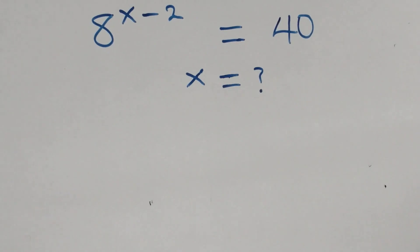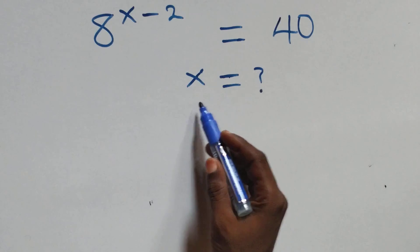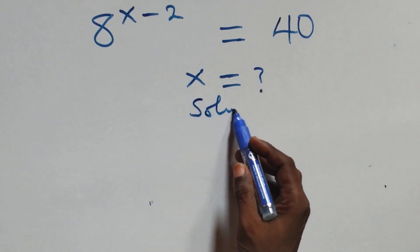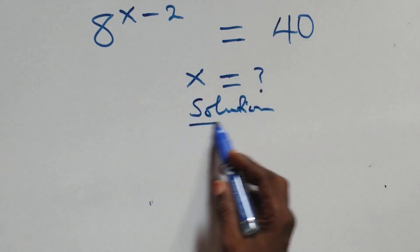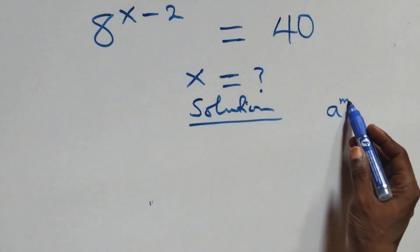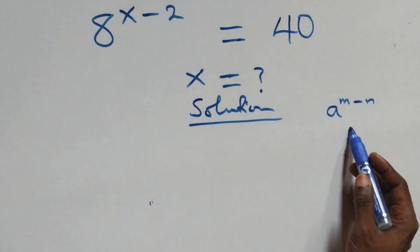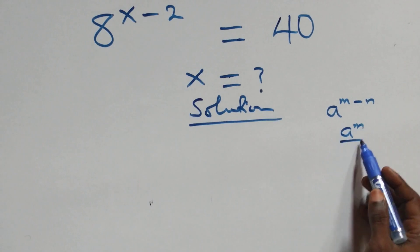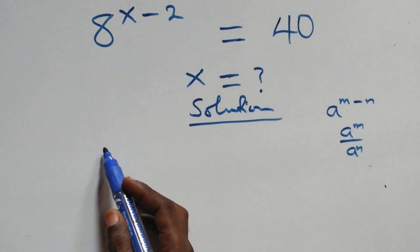Hello, you are welcome. How to solve this nice exponential equation. This follows from the law: a raised to power m minus n is the same thing as a raised to power m over a raised to power n.